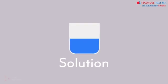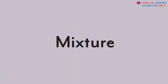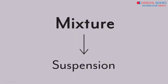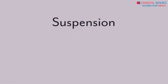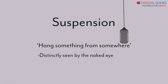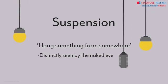We have learnt what a solution is in this topic. Now let us look at another type of a mixture — we call it a suspension. Why the name suspension? Let us see what the term suspension suggests. It means to hang something from somewhere. And when we suspend something in the air or in water, it can be seen distinctly by the naked eye. Have you seen mics which are suspended in the air or a lamp hanging from the ceiling? Well, these are all simple examples of a suspended object.